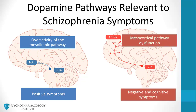In the other figure, the mesocortical pathway is depicted in red. Recent findings suggest that a dysfunction of the mesocortical pathway may be a part of the neurobiology of negative and cognitive symptoms.